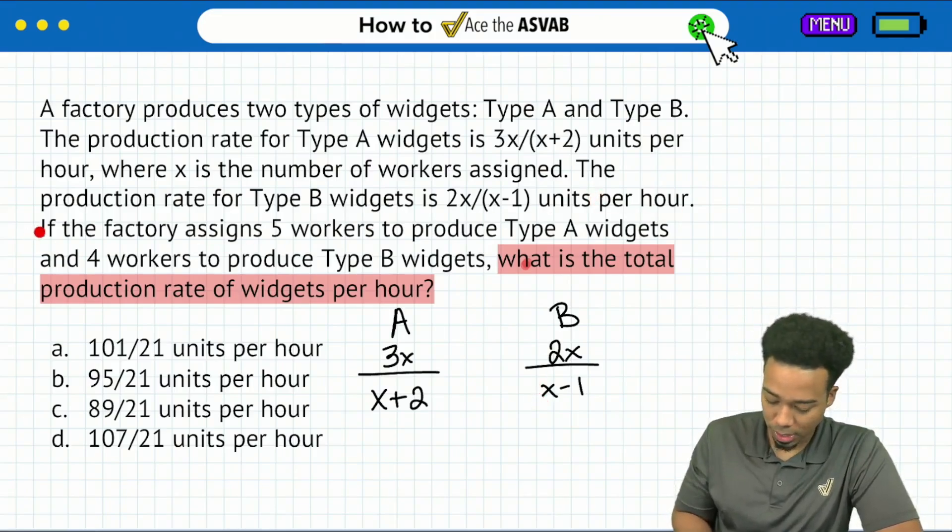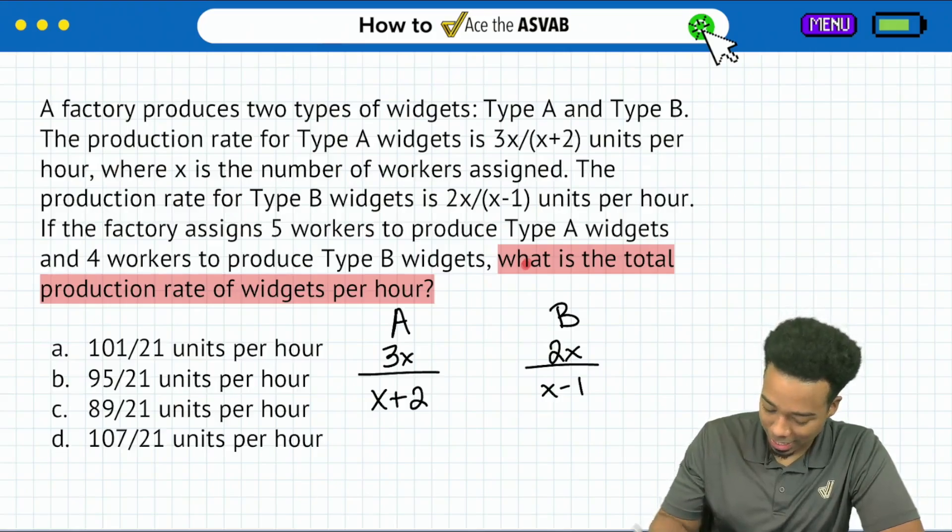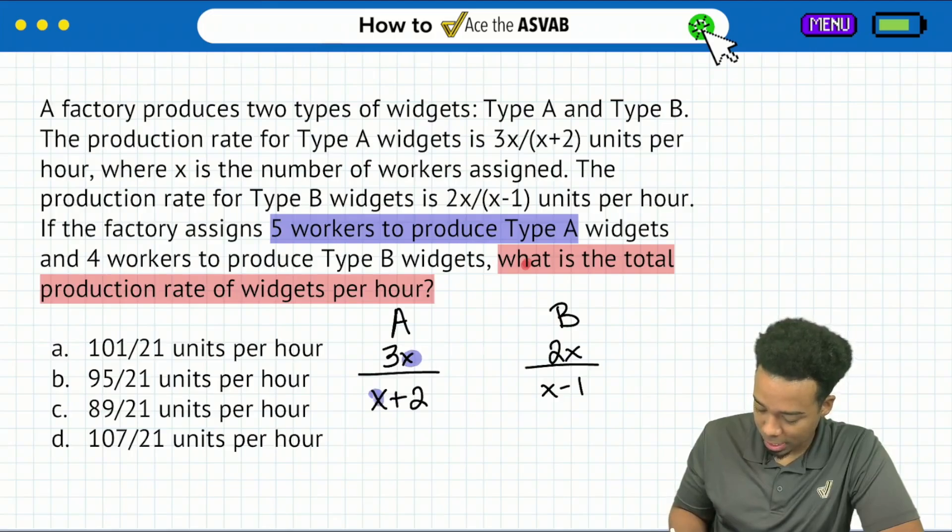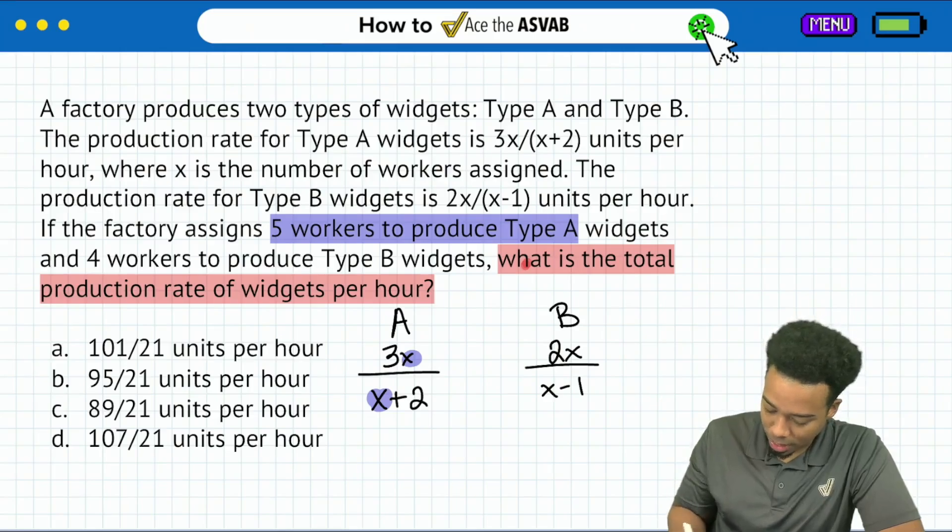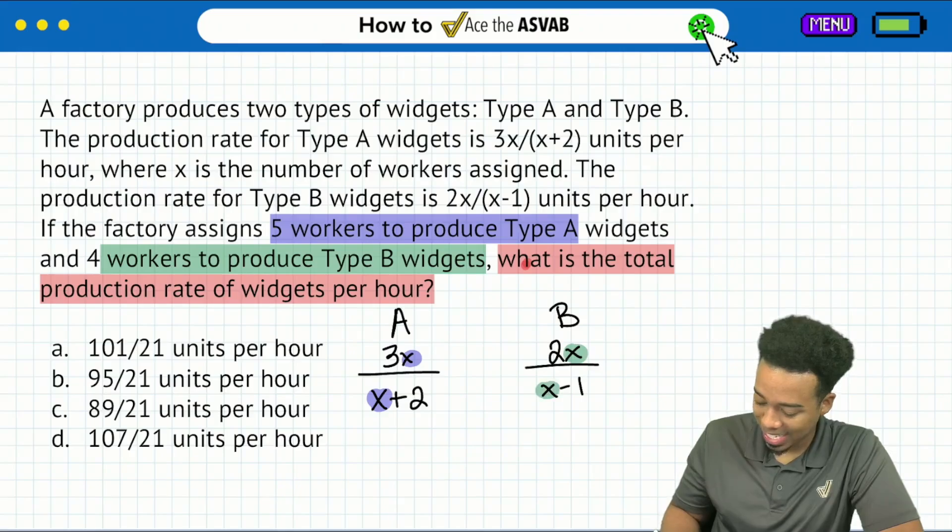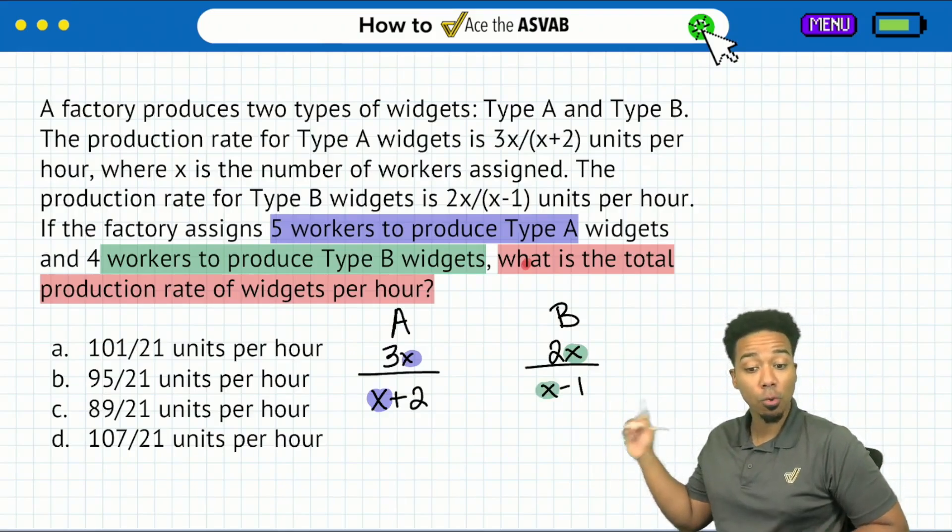Now they tell us right after this that the factory assigns, I'm going to highlight this, five workers to produce type A widgets. So I'm going to replace each of these x's with five. And then we also have four workers to produce type B widgets. So I'll replace that x over here with four.